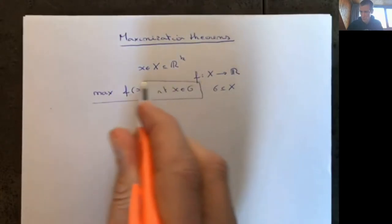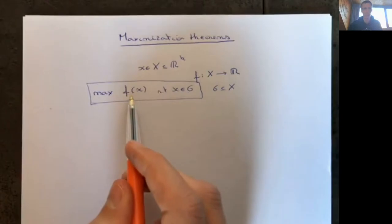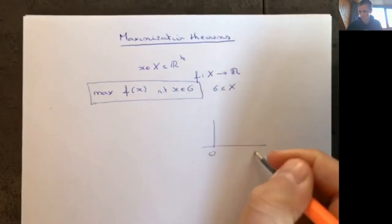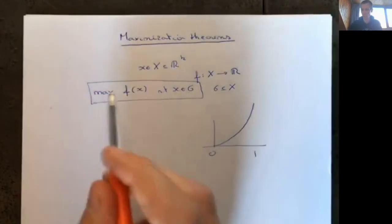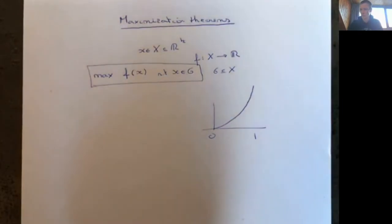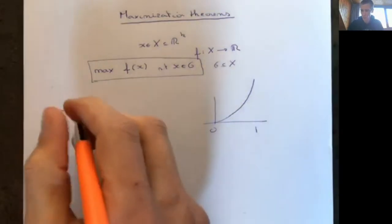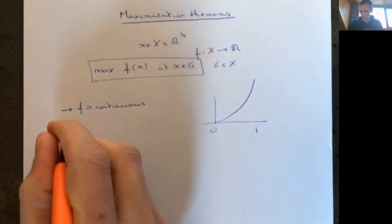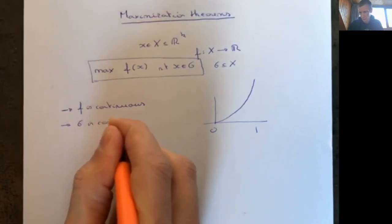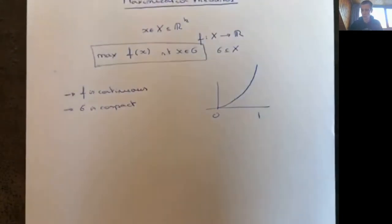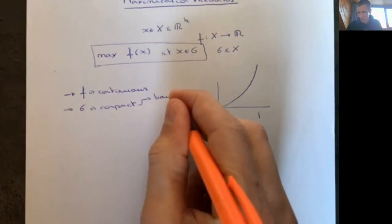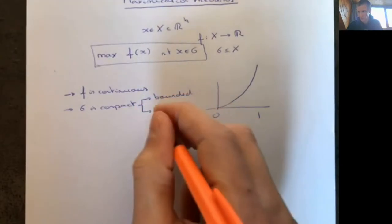This problem is not always well defined. You can make sets g and functions f such that the maximum will never be attained. For example, if I have a function from (0,1) that goes to infinity, there will be no maximum. So there are some conditions under which a maximum always exists. One of the easiest conditions to use is that f is continuous and that g is compact. Compactness here, since g is a subset of R^k, means that g has to be bounded and also closed.